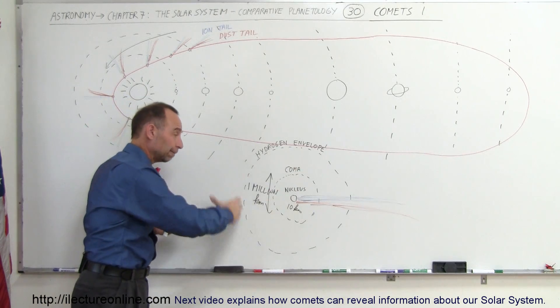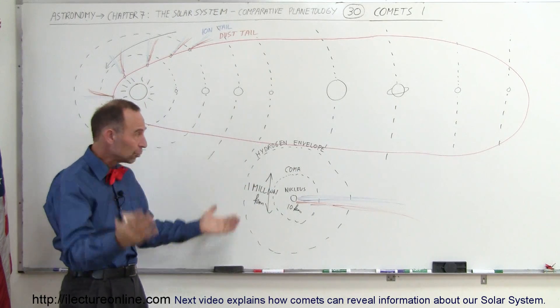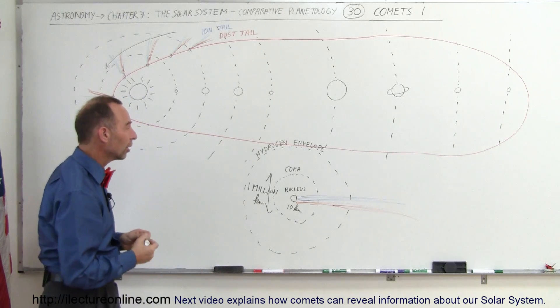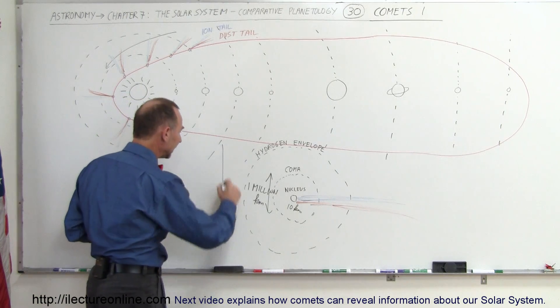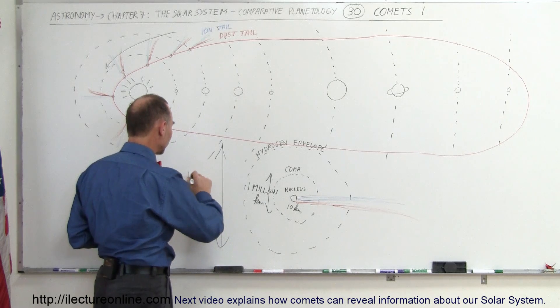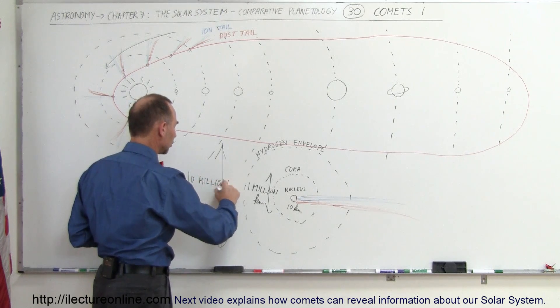So with ultraviolet telescopes, we can actually see that enormous envelope around the comet, and that envelope tends to be somewhere in the neighborhood of about 10 million kilometers across. Absolutely huge.